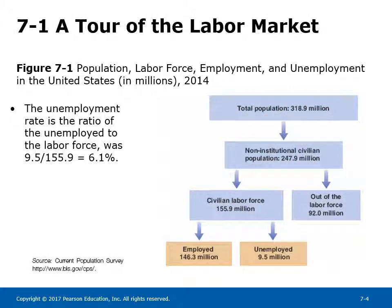Figure 7-1 shows population, labor force, employment, and unemployment in the United States in millions for the year 2014. The unemployment rate is the ratio of the unemployed to the labor force times 100. It was 9.5 over 155.9 times 100, equal to 6.1% in 2014. Total population was 318.9 million. Non-institutional civilian population was 247.9 million, referring to people over 16 who are not in the armed forces, incarcerated, or in mental institutions.